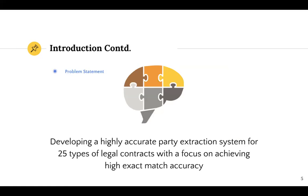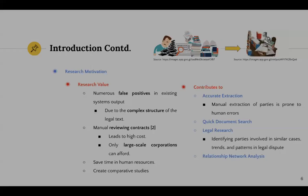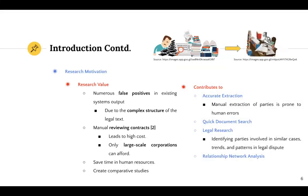The problem we are addressing is developing a highly accurate system for extracting and identifying the parties involved in a legal contract with a focus on achieving high exact match accuracy. These findings motivated us to do this research. Manual reviewing contracts leads to high costs, so only large-scale corporations can afford it. Numerous false positives in existing systems output due to the complex structure of the legal text. Automation of such tasks saves time in human resources and can create comparative studies using extracted parties and their corresponding documents.